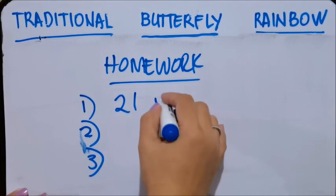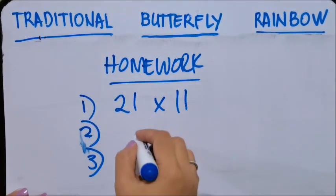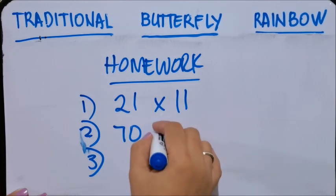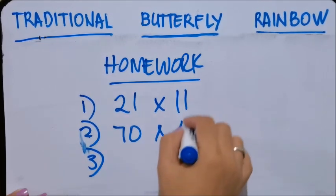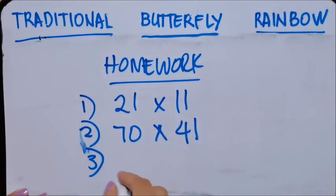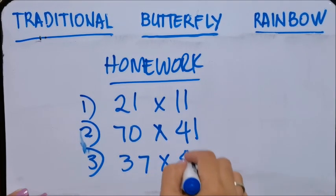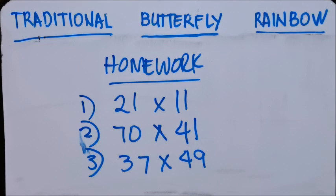Okay? So I'll just give you three homework problems: 21 times 11, 70 times 41, and 37 times 49.